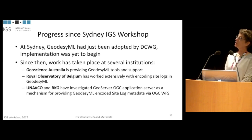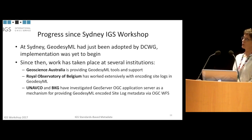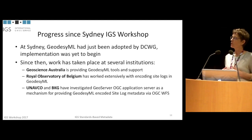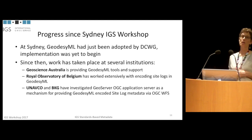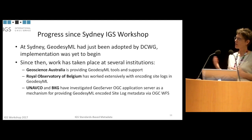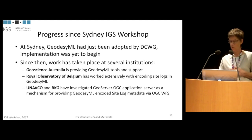At Sydney, we had just adopted the GeodesyML schema and implementation was yet to begin. Since then, work has been going on at several organizations. Geoscience Australia is doing the heavy lifting — providing the GeodesyML schema, all documentation, and tools to access the information. ROB, the Royal Observatory of Belgium, has been working with encoding site logs in GeodesyML. UNAVCO and BKG are investigating serving OGC metadata including GeodesyML as an application schema for site log metadata through WFS.